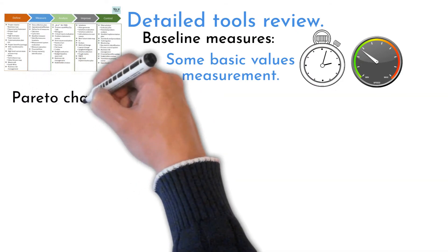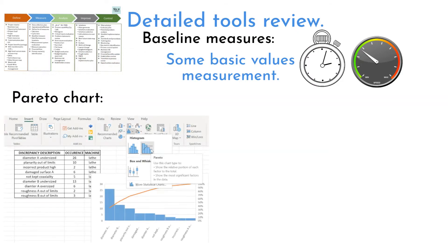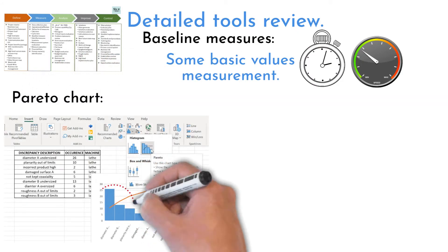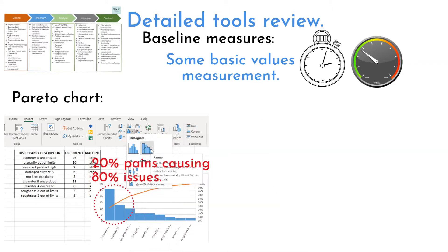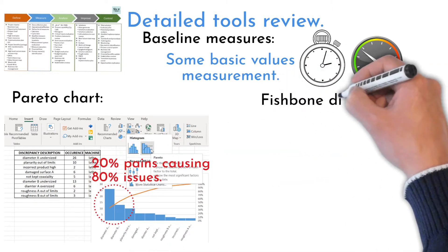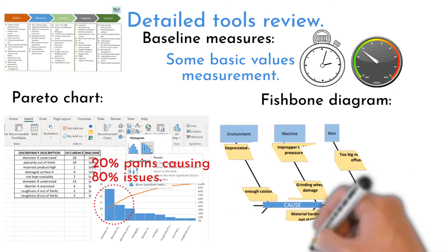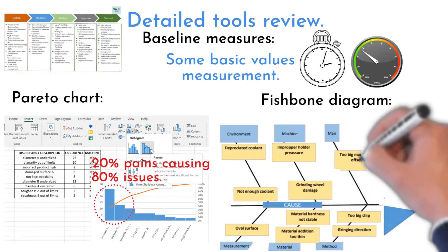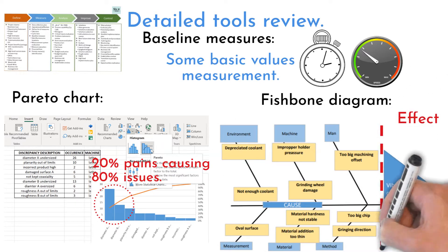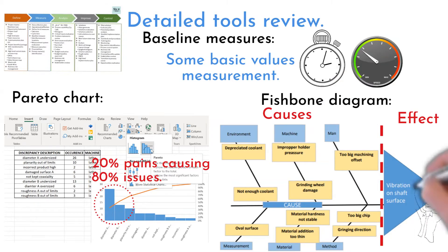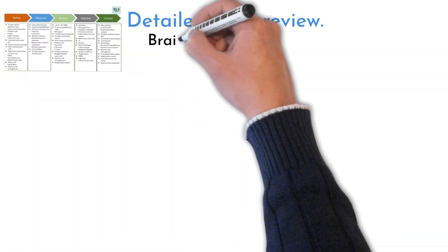Pareto Chart helps with revealing where the biggest potential for improvement lies. We can improve 80% of the pain by addressing the biggest issue. By using the Fishbone Diagram, we address malfunctioning process effects by identifying their causes in the diagram. Fishbone is a great tool to use together with the following tool.